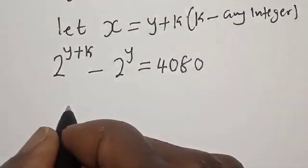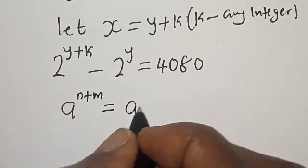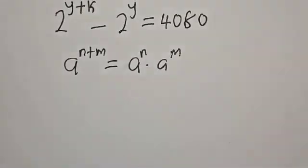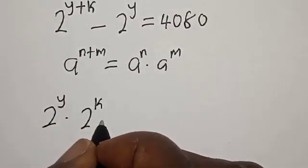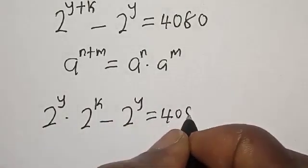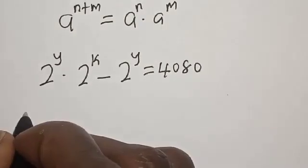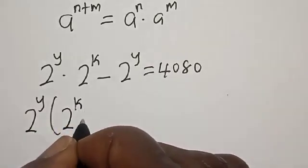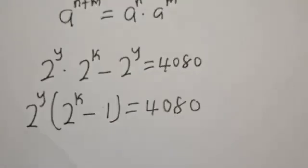Now, note that a raised to power (n plus m) equals a raised to power n multiplied by a raised to power m. Applying this, we get 2 raised to power y multiplied by 2 raised to power k, minus 2 raised to power y, equals 4080. Factoring out 2 raised to power y, we get 2 raised to power y times (2 raised to power k minus 1) is equal to 4080.